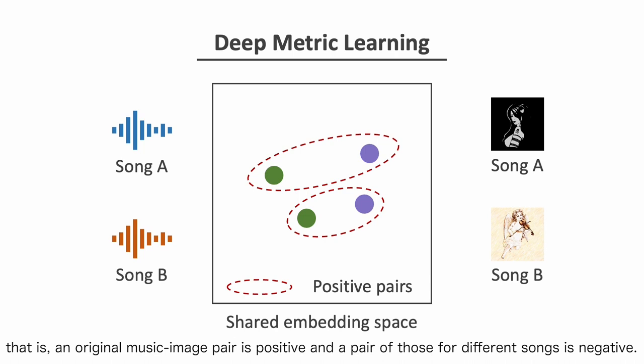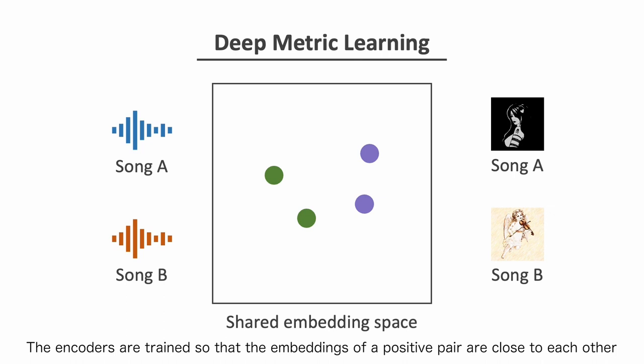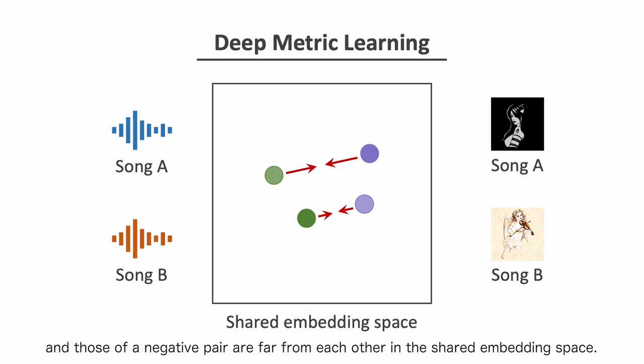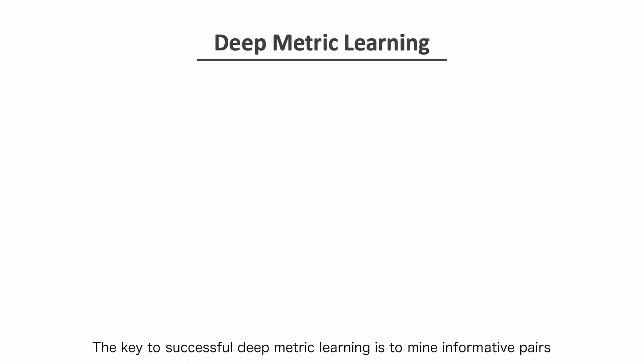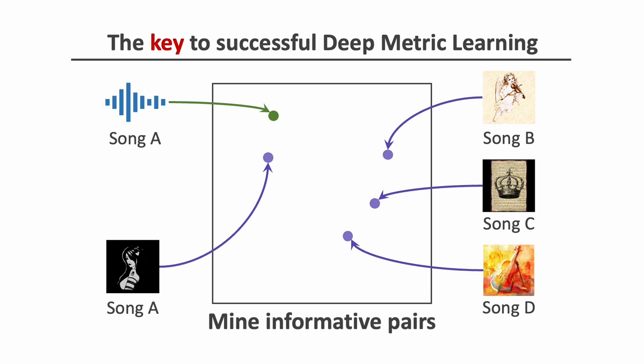While training, we assume that a pair of music audio signal and an image for the same song — that is, an original music-image pair — is positive, and the pair of those for different songs is negative. The encoders are trained so that the embeddings of a positive pair are close to each other, and those of a negative pair are far from each other in the shared embedding space. The key to successful Deep Metric Learning is to mine informative pairs so that a loss function returns meaningful feedback to the encoders.